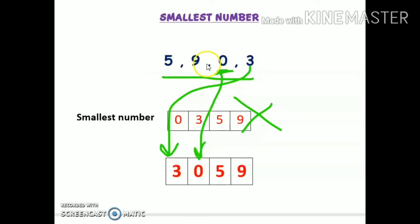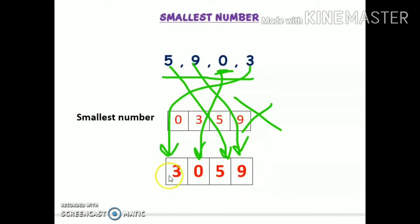From five and nine, the smallest number is five, so write five next, and the last will be nine. So the number is three thousand fifty-nine. The answer is three thousand fifty-nine is the smallest number which can be formed from five, nine, zero, and three. Always read the question properly — whether they are asking for a four-digit or three-digit number — and whenever there is zero, always take zero at the second place.